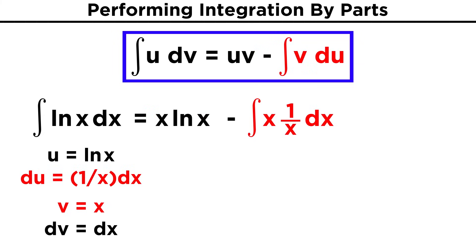Then we subtract from that the integral of v du. v is x, and du is one over x dx, so the x's cancel, leaving us with simply dx. Integrating dx gives us x, and our final answer is x ln(x) minus x plus c.